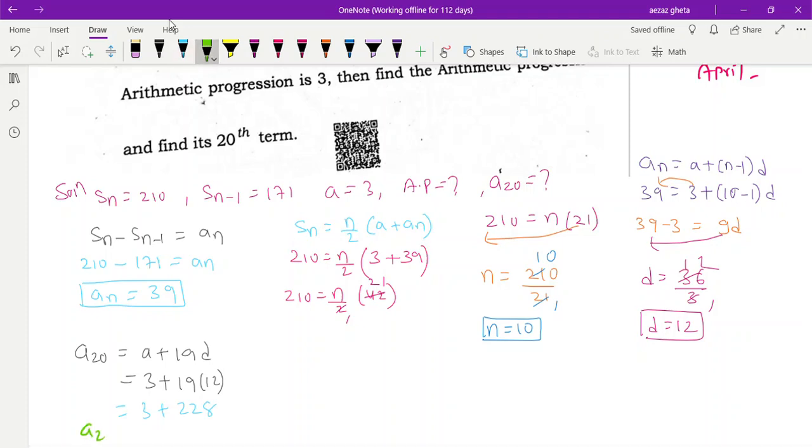So a20 is equal to 79. Everybody clear? If you have any doubt you can write in comment.